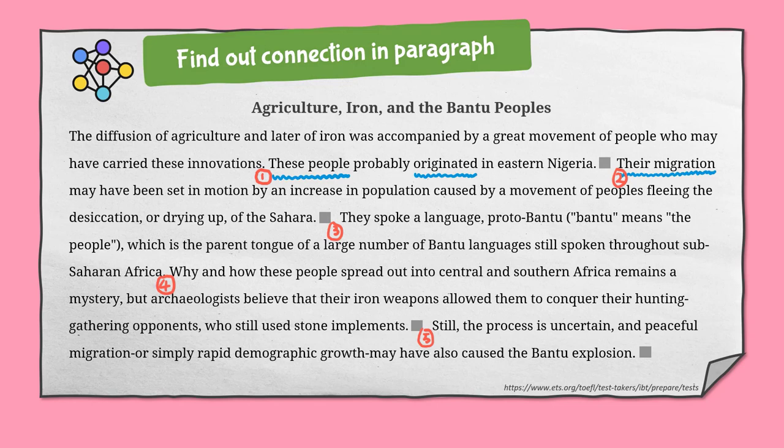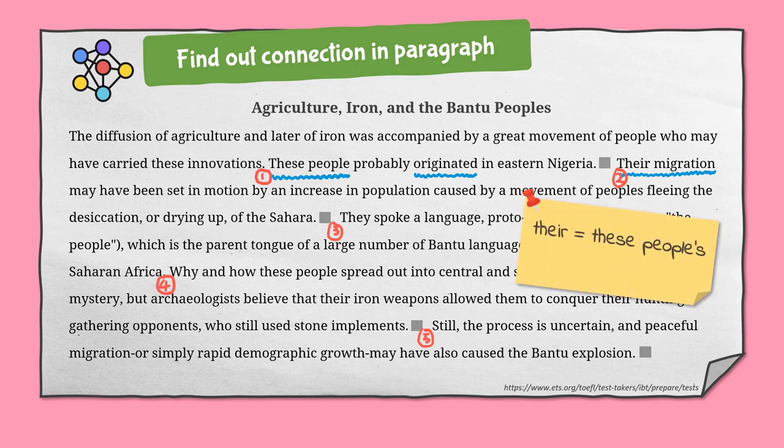Pay attention to pronouns. 'Their' refers to 'these people,' which means these two sentences are closely related to each other. So don't plug the highlighted sentence into the first square.